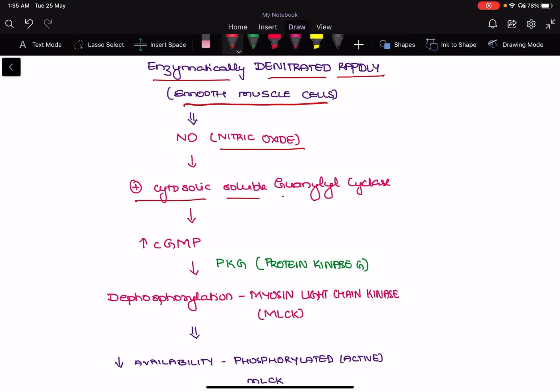In turn, it will increase the cyclic GMP levels. Increase in the cyclic GMP levels will activate the protein kinase activity that will dephosphorylate. So protein kinase G will help in dephosphorylation of myosin light chain kinase.